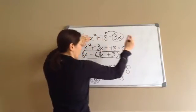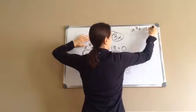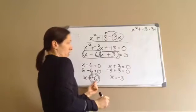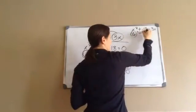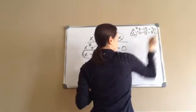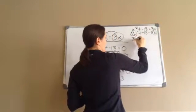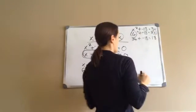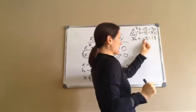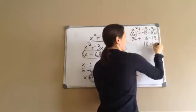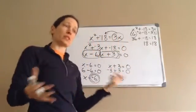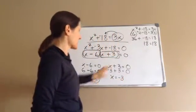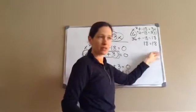Let's go ahead and verify. Take the original problem: x squared plus negative 18 equals 3x, and insert x equals 6. So 6 squared plus negative 18 equals 3 times 6. 6 squared is 36, plus negative 18 equals 3 times 6 which is 18. So 36 minus 18 is 18, and 18 equals 18 — kind of like 0 equals 0. Therefore we got it right.